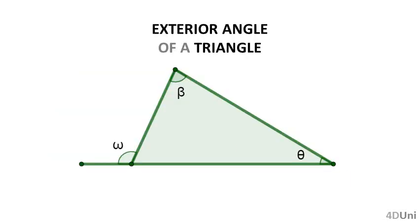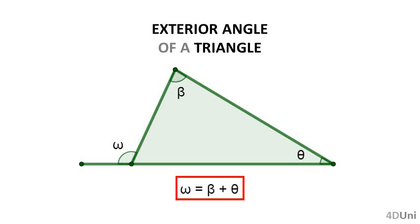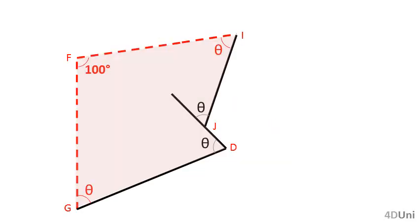Before we continue, just remember the following basic property about triangles: the measure of an exterior angle corresponding to one vertex is equal to the sum of the measures of the interior angles corresponding to the other two vertices. Now let's go back to our problem.